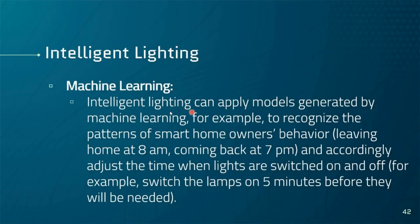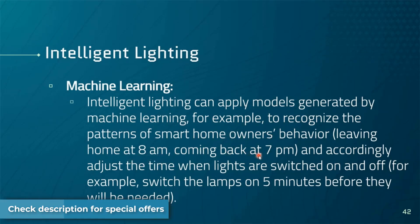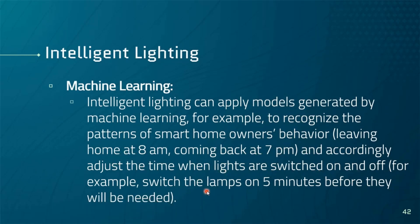Data analysts make and update algorithms for the control applications, feeding into the machine learning algorithm. Intelligent lighting can apply machine learning models to recognize patterns — for example, recognizing that a homeowner leaves at 8 AM and returns at 7 PM, and accordingly adjusting when lights switch on and off, such as switching a lamp on five minutes before it will be needed. This wraps up the basic elements of an IoT system.